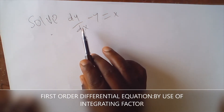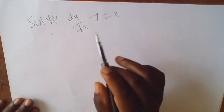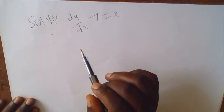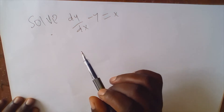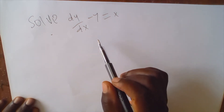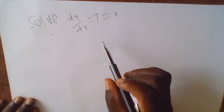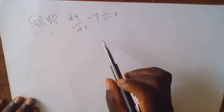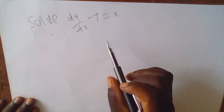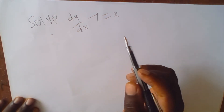Solve dy/dx minus y equals 2x. This is one of the linear equations that requires to be solved by use of an integrating factor.